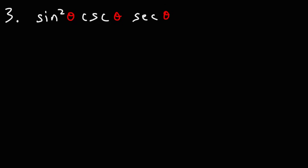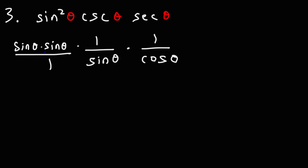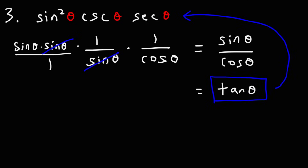Next: sine squared times cosecant theta times secant theta — how can we simplify this? Cosecant is equivalent to 1 over sine, and secant is 1 over cosine theta. We can write sine squared as sine theta times sine theta. We cancel one of the sine thetas, leaving sine over cosine. Sine theta over cosine theta converts to tangent theta, so tangent theta equals the entire original expression.